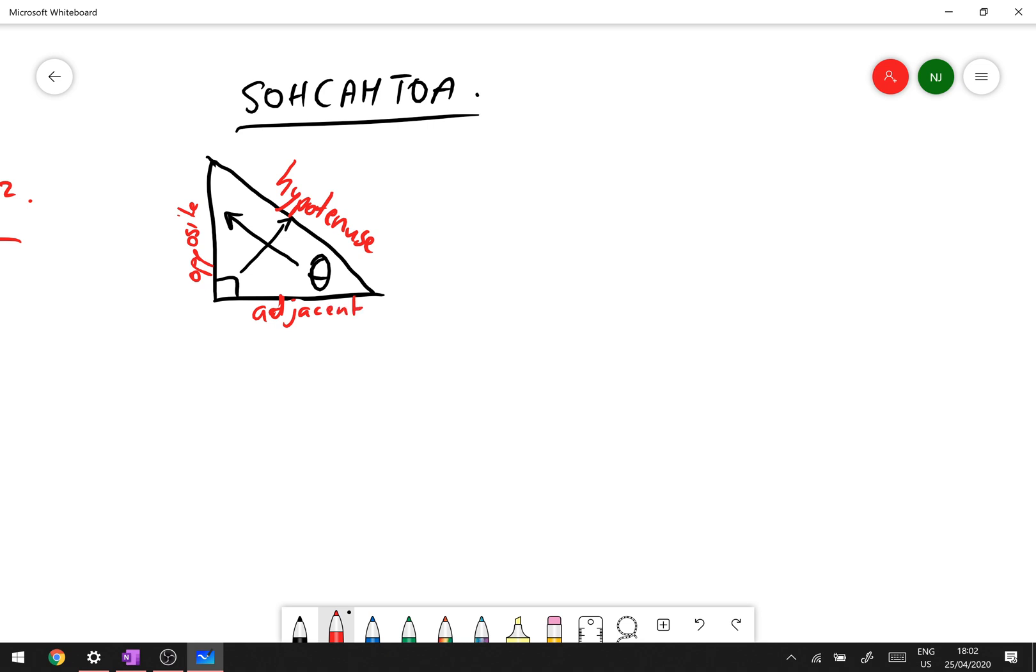And that leaves the last little side that is next to it but is not the hypotenuse, or the shorter side that's next to the angle, and it's called the adjacent.